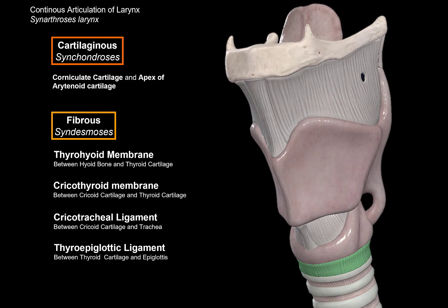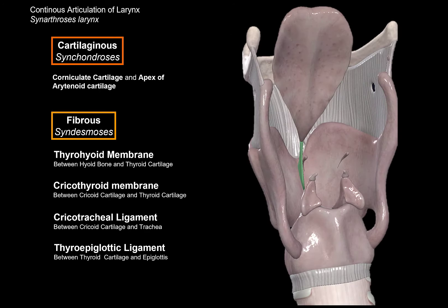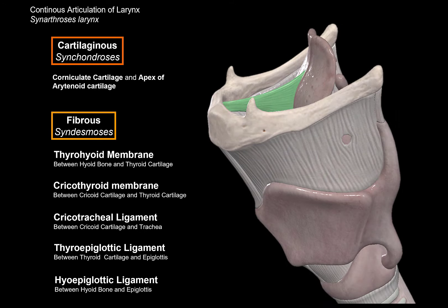Then we have the thyroepiglottic ligament, connecting the epiglottis to the thyroid cartilage. And then we have the hyoepiglottic ligament, which connects the epiglottis to the hyoid bone. So all of those are the continuous connections we have in the larynx. Now let's do the discontinuous connections.